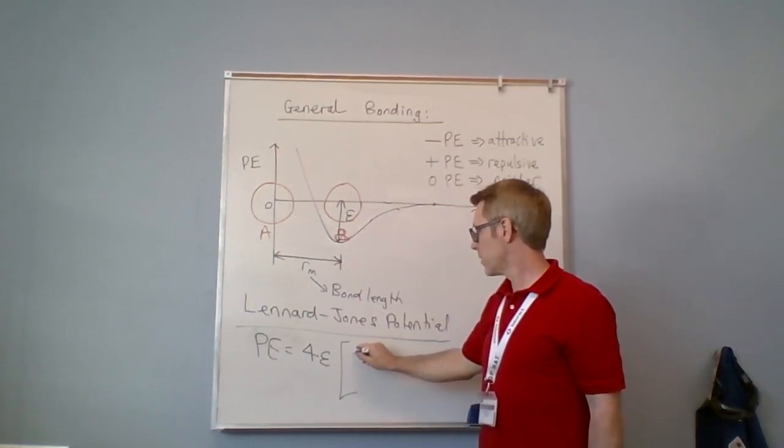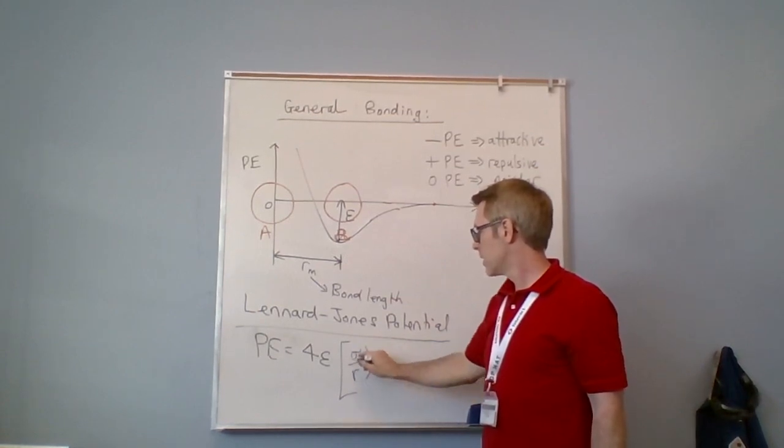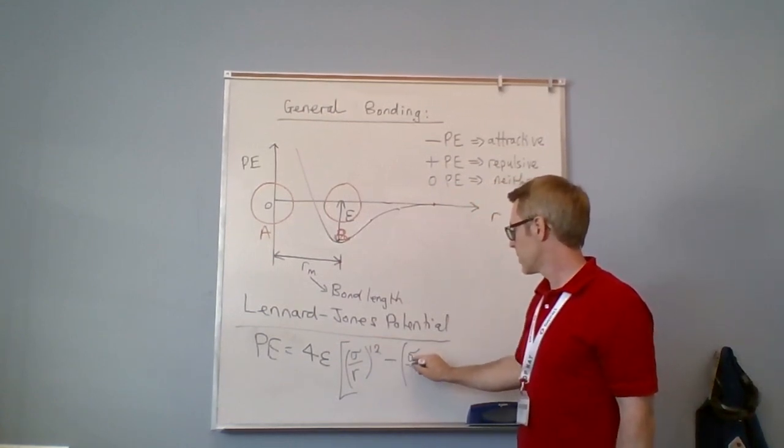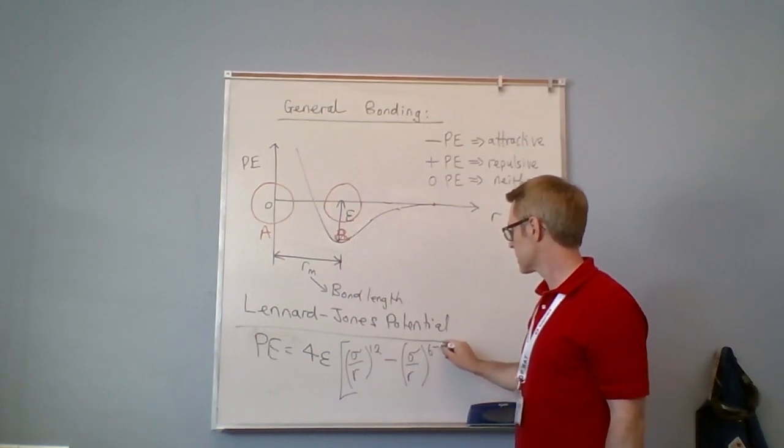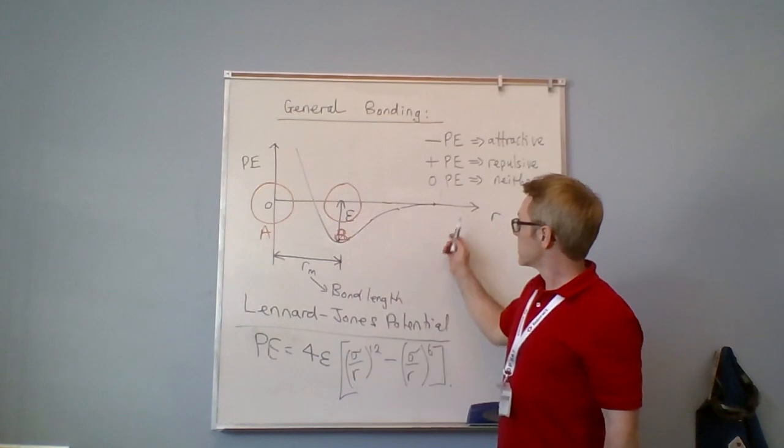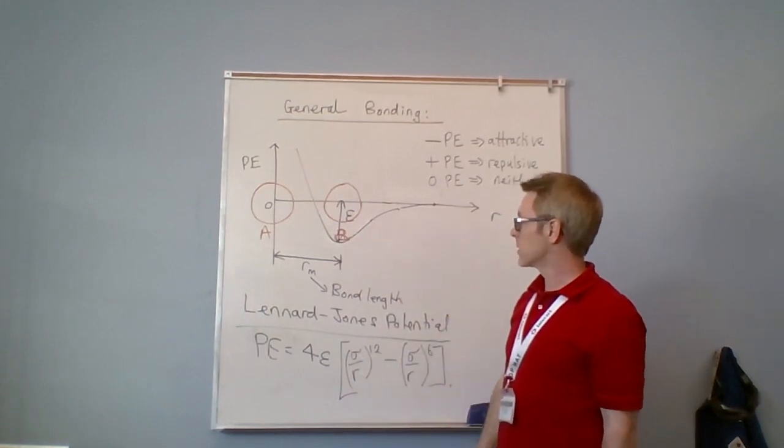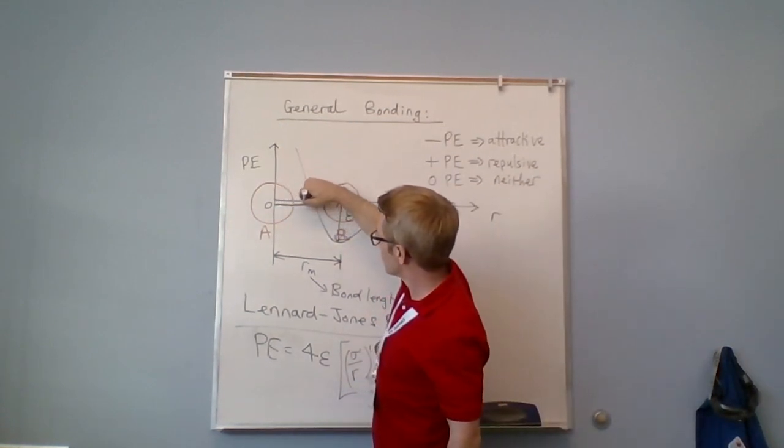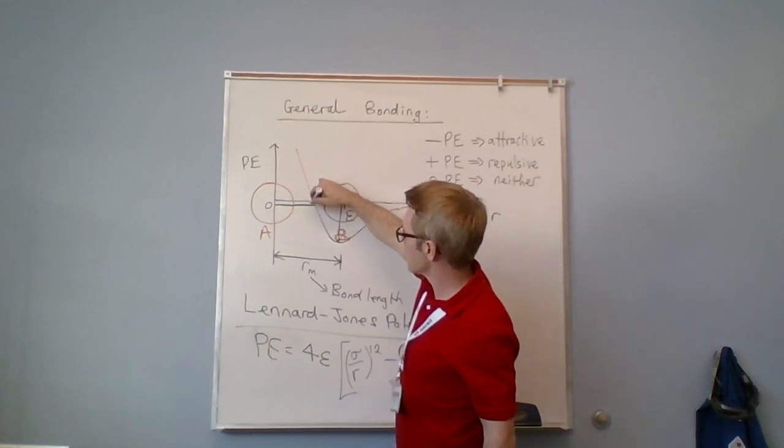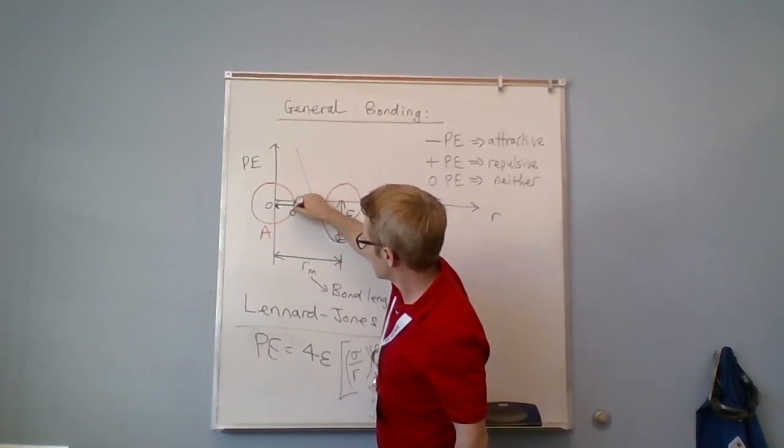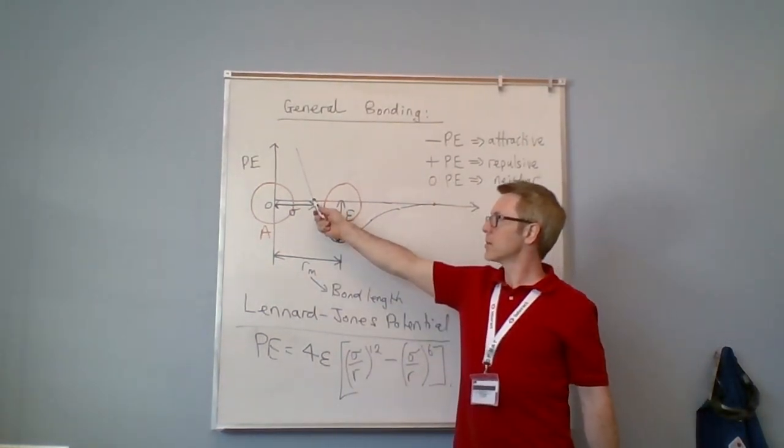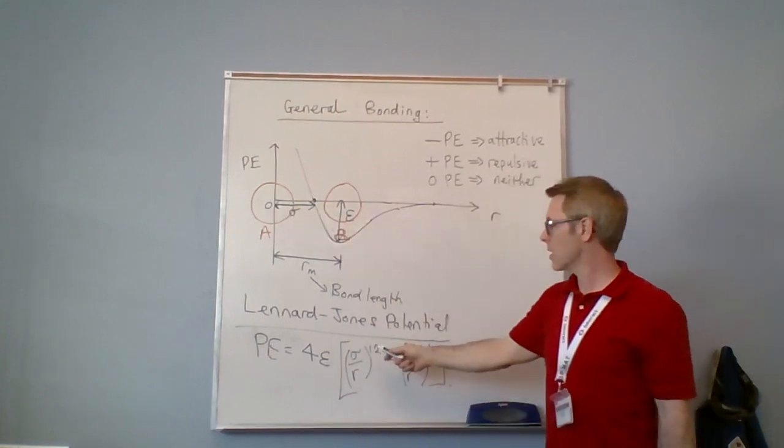Multiplied by something called sigma over r raised to the power 12, minus sigma over r raised to the power 6. r is just units of length, sigma is also a unit of length but it's a fixed unit of length. Sigma is the length from 0 to where the potential is 0, so this point here, that's sigma. So where there's no net attraction or repulsion here, that's sigma, it's a constant units of length.